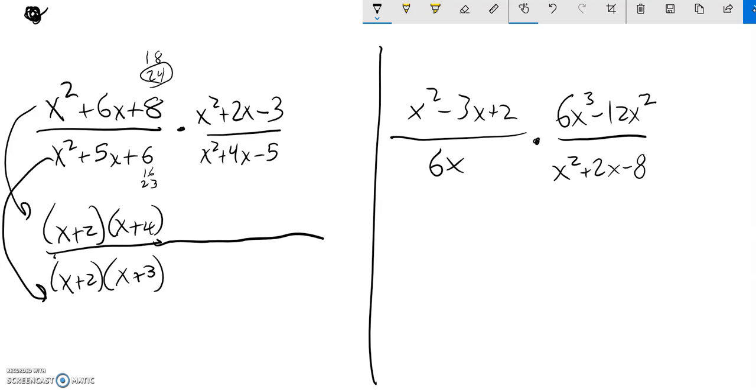Since it's multiplication, it's just going to be all numerator. So let me factor this one. Things that multiply to negative 3 add to 2. 1 and 3. 3 and negative 1. So this factors to x minus 1 multiplied by x plus 3.